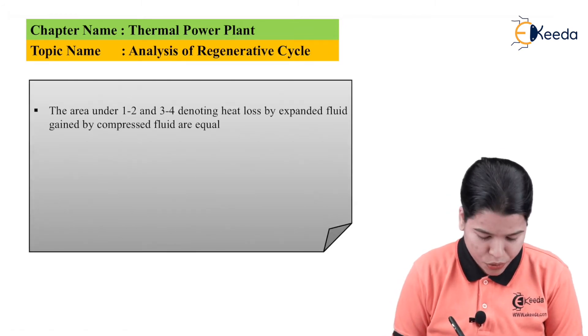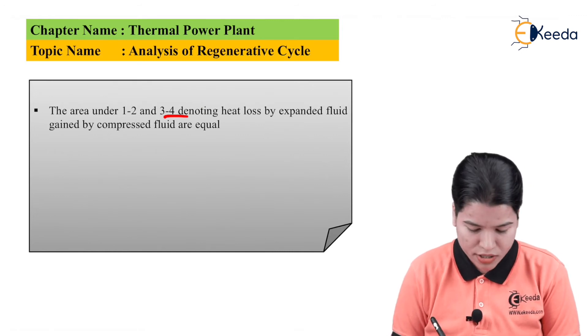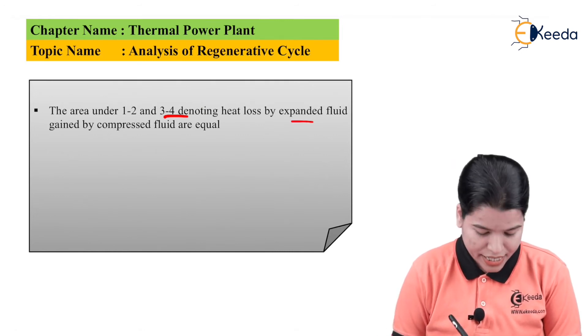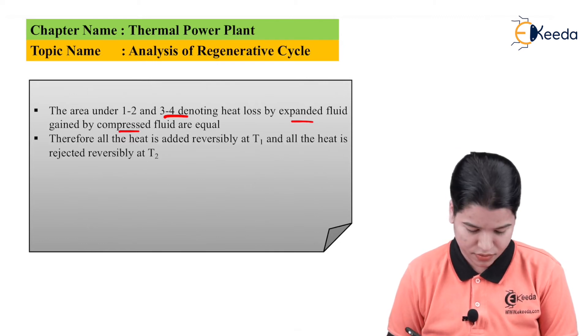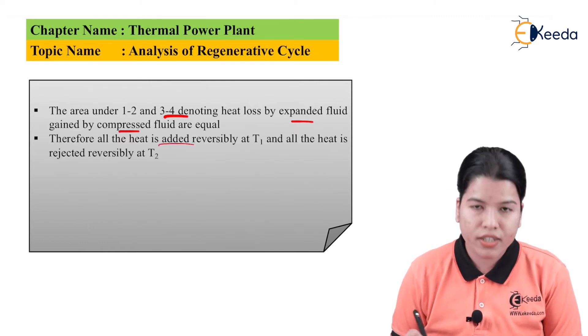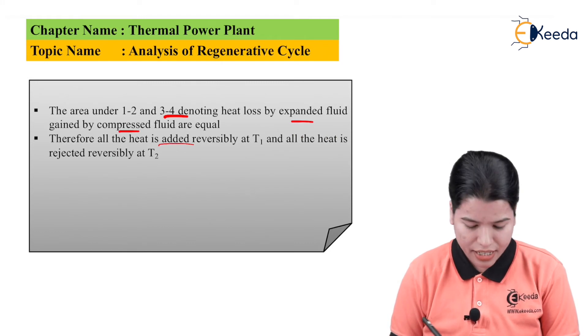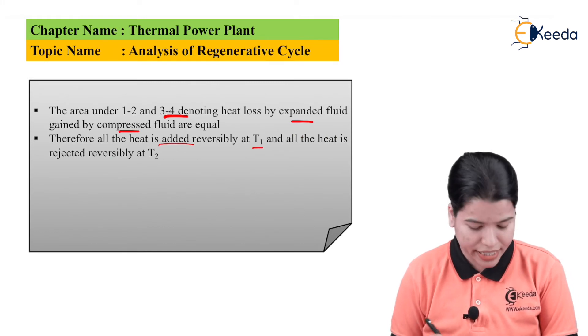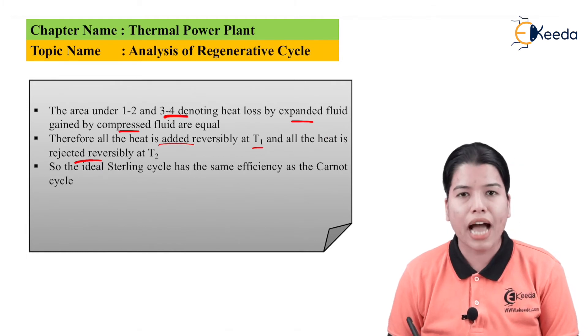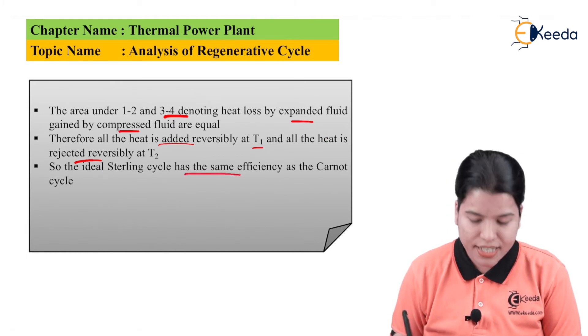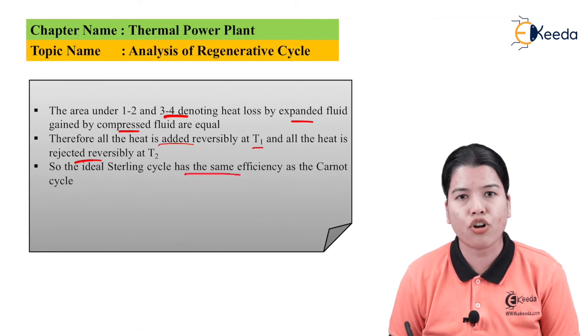Now, the area under 1 to 2 and 3 to 4 denoting the heat loss by the expanding fluid gained by the compressed fuel is equal. Therefore, all the heat can be added reversibly at T1 and all the heat is rejected reversibly at T2. The ideal Stirling cycle has the same efficiency as the Carnot cycle.